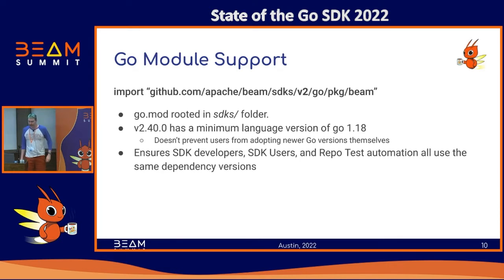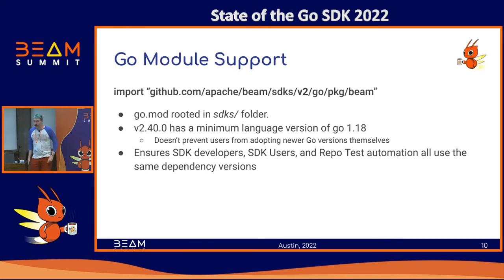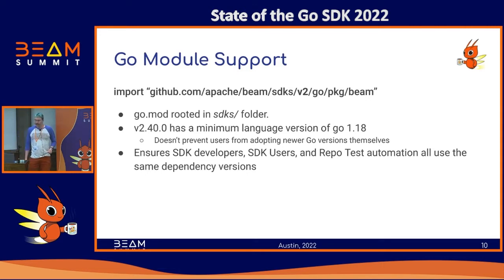One of the other bits for exiting experimental was actually beginning to use Go modules for dependency management. As of the November 2021 Beam release, which was version 2.33, this finally happened for the Go SDK. Go modules are basically how Go has standardized on dependency management and versioning, and they were first introduced in Go 1.11 back in 2017 or so.